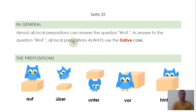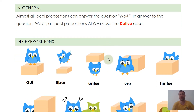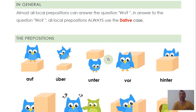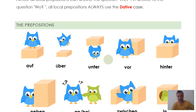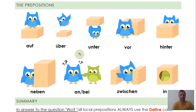Almost all local prepositions can answer the question wo — where. And if you answer the question wo with a local preposition, you always have to use the dative case.